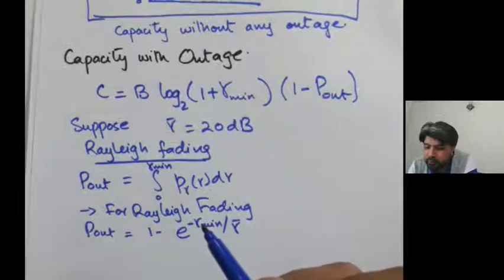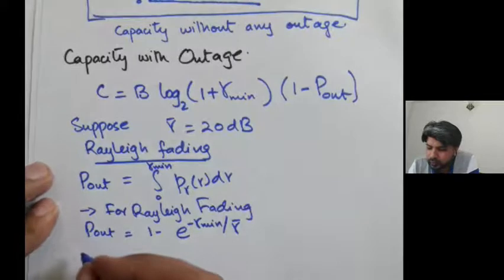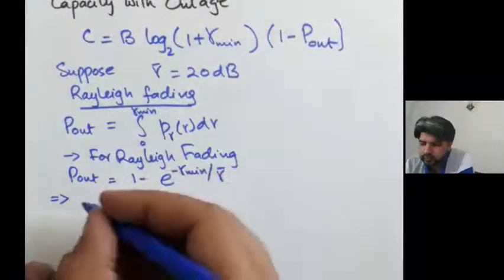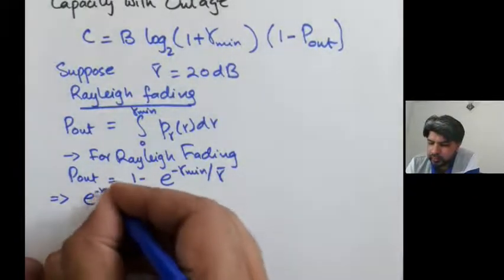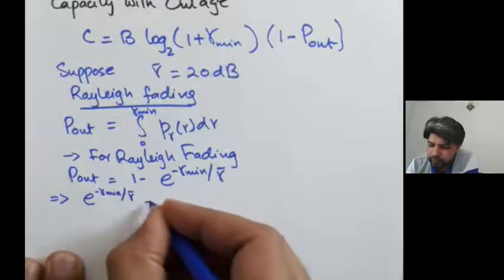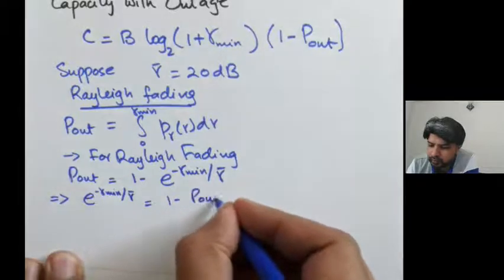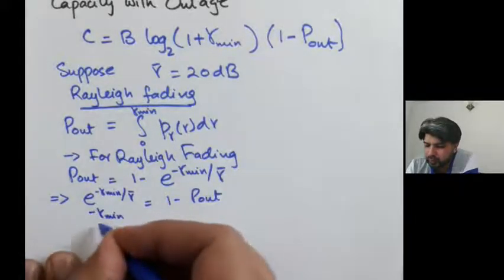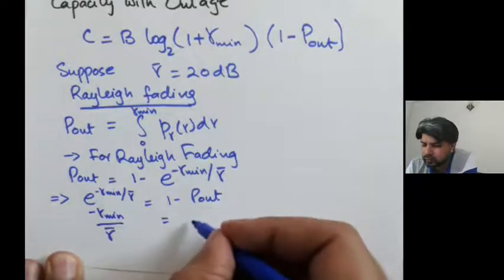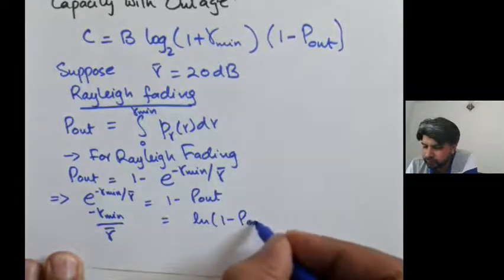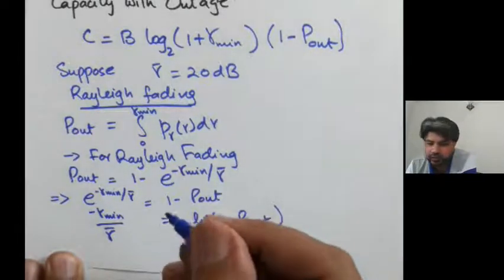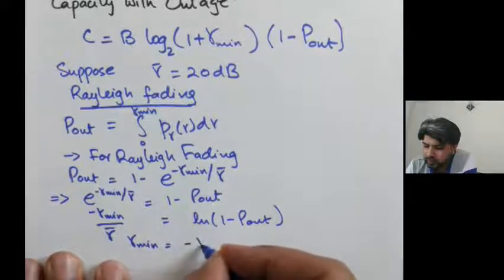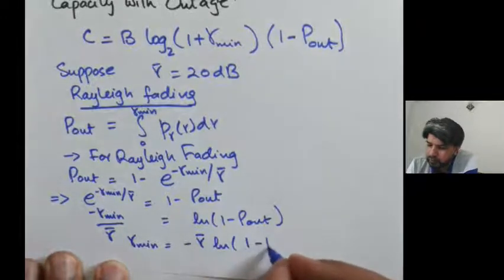Now let's compute γ_min as a function of p_out. From the outage expression, e^(−γ_min / γ̄) = 1 − p_out. Taking the natural log of both sides: −γ_min / γ̄ = ln(1 − p_out). Therefore, γ_min = −γ̄ · ln(1 − p_out).